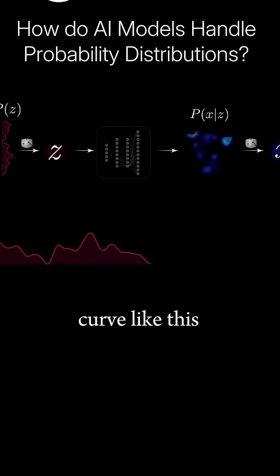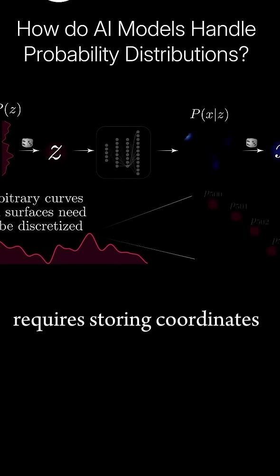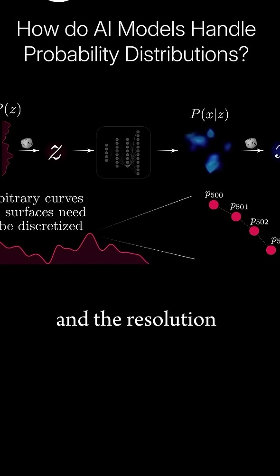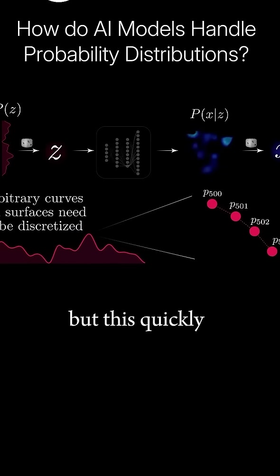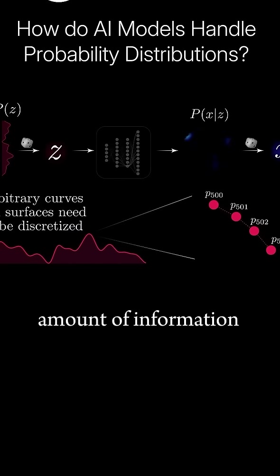Drawing a smooth curve like this requires storing coordinates of many points, and the resolution depends on how many points we use. But this quickly becomes impractical due to the sheer amount of information needed.